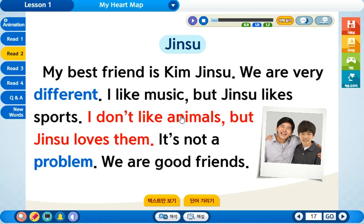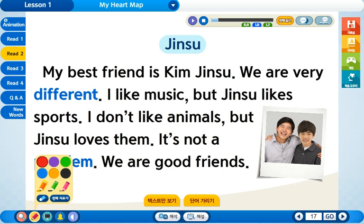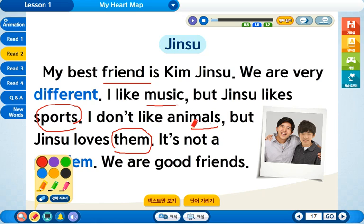but에도 주의를 하셔야 되고요. 여기 앞에 있는 them은 무엇을 가리킵니까? them은 그것들이죠. them은 music이 될 수 없고, friend도 될 수 없습니다. 왜냐면 them은 복수이기 때문입니다. 그렇다면 여기 them이 될 수 있는 건 sports나 animals가 될 거예요. 여기서 진수가 사랑하는 것은 sports입니까, animals입니까? 여기 진수는 동물들을 사랑한다고 했으니 animals. 단수와 복수가 항상 일치되어야 한다는 거, 철칙입니다. 꼭 기억을 해 주시기 바랍니다.